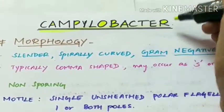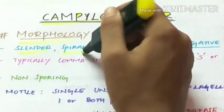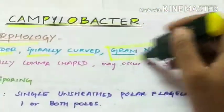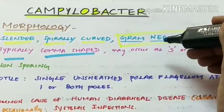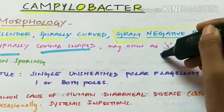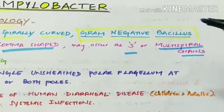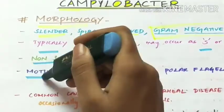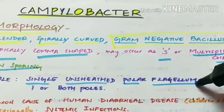Campylobacter morphology: it is a slender spirally curved gram-negative bacillus, typically comma-shaped, and can also occur as S-shaped or multi-spiral chains. Campylobacter is non-sporing and motile with the help of a single unsheathed polar flagellum present at one or both poles.